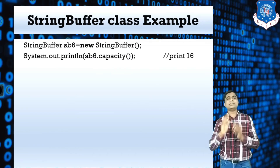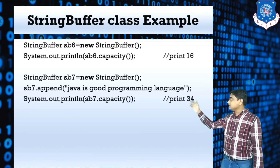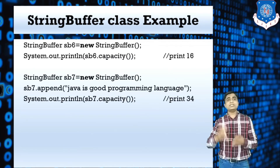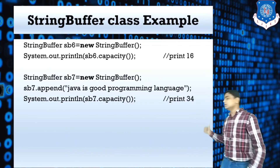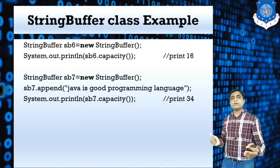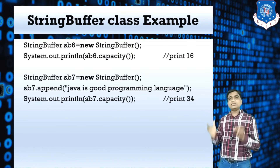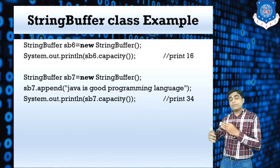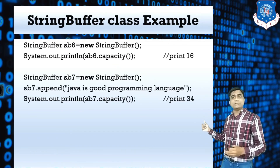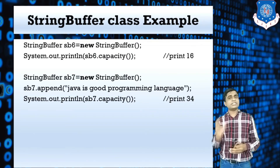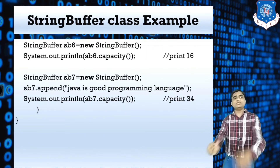The capacity method example: the default capacity of the buffer is 16. In sb6, I passed no argument, so the default capacity is 16. In sb7, I appended 'Java is a good programming language', which has more than 16 characters. The buffer size automatically increases: the formula is (last capacity × 2) + 2 = (16 × 2) + 2 = 34. That's why the result is 34.